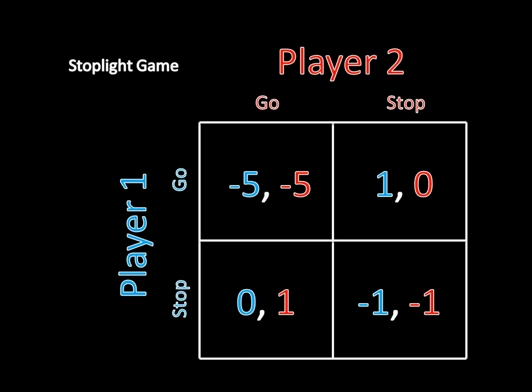And I want to look to see if this is a Nash equilibrium. Is it a Nash equilibrium for player one to go and player two to stop? The answer is yes. Why is that the case? Well, let's think about player two's possible deviation. She could switch from stopping to going, but if player one is going, that means if she switches from stopping to going, she's going to cause a car accident, and that's really bad for her. So she doesn't want to change her strategy.